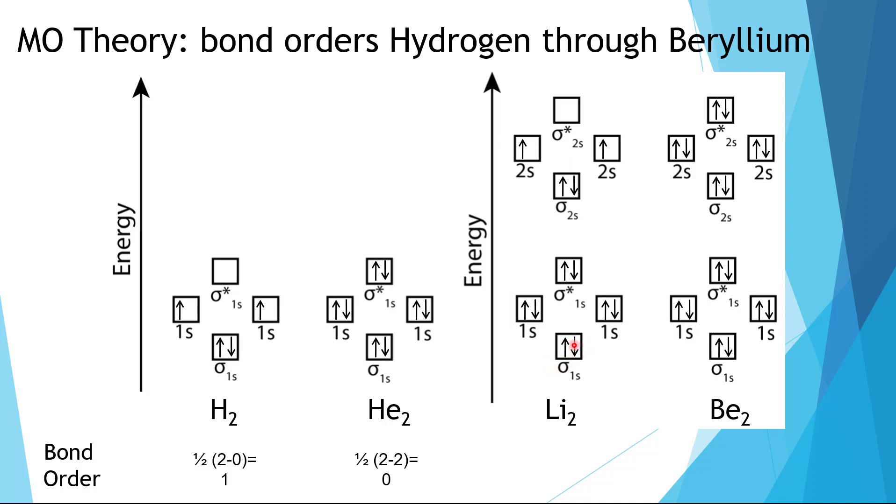For lithium, we can see that we have two, four in bonding orbitals and two in antibonding orbitals. So we'll have four minus two times by one half, and that equals one.